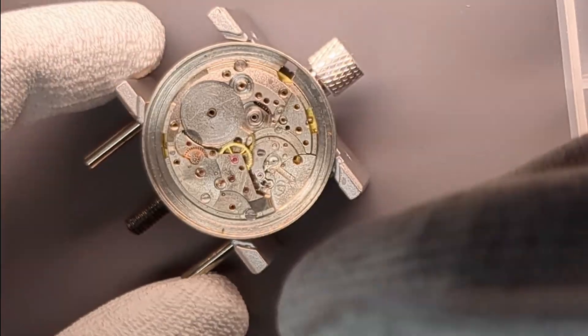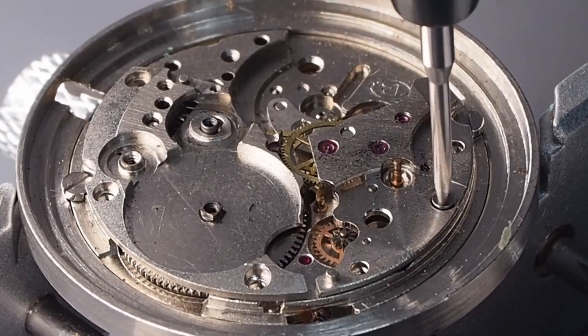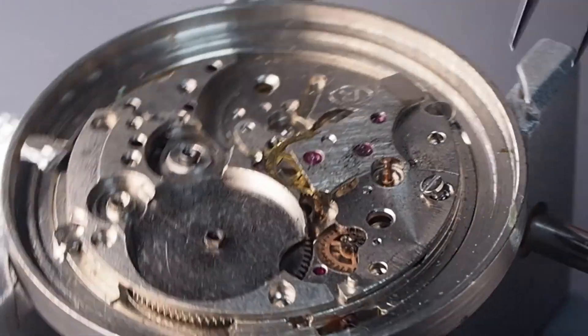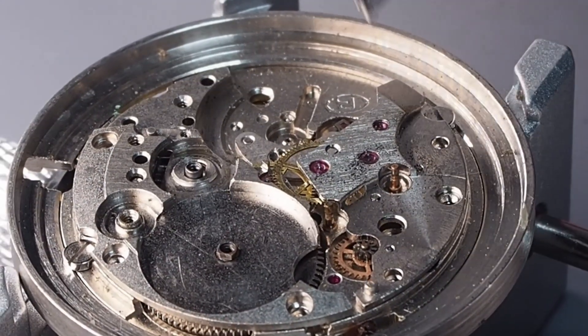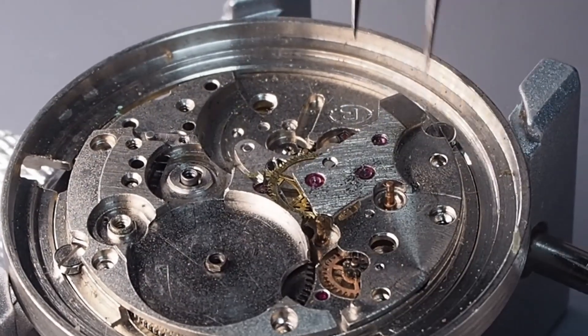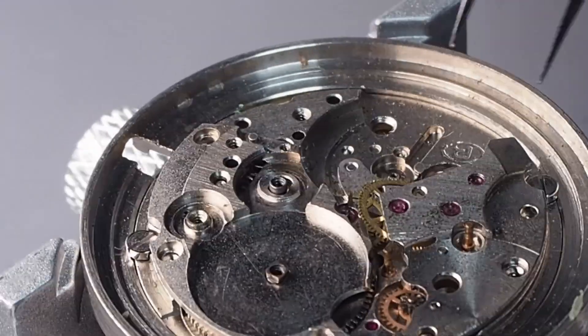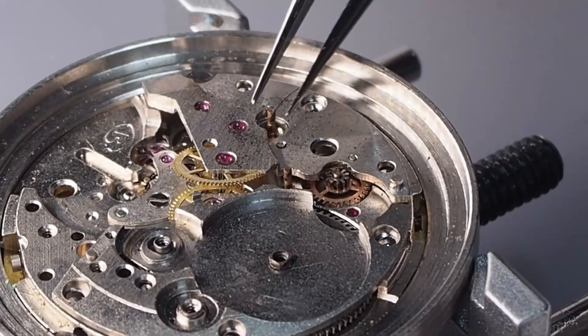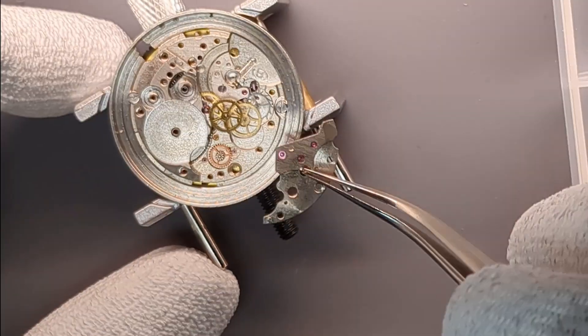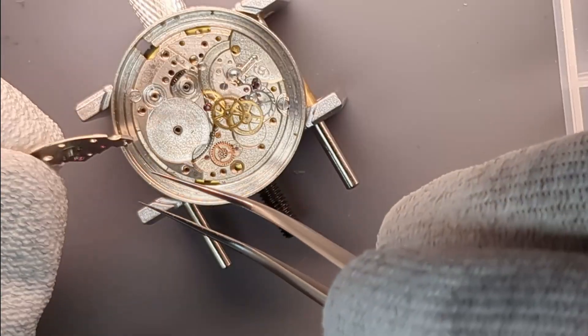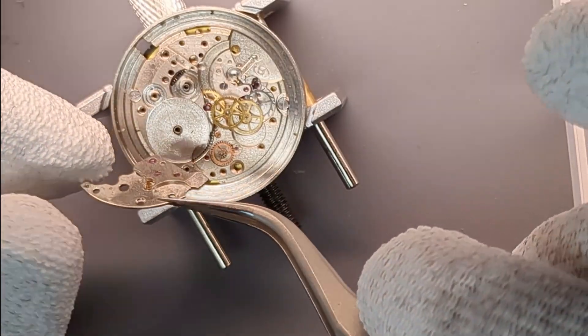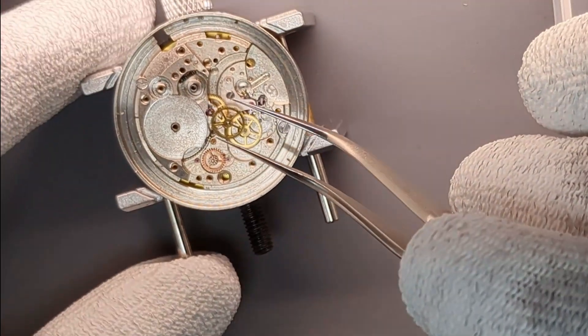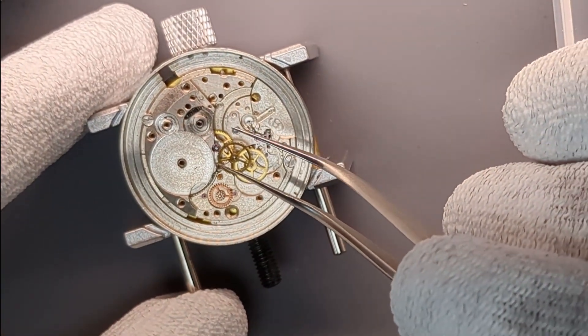Before I remove the barrel bridge, I need to remove the train bridge and the train wheels. The barrel bridge is one of the main plates that support the gear train. Underneath it sits the main spring barrel, which stores the energy for the entire movement. The design on the Vostok is very robust. Not fancy, but built to last.